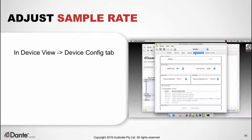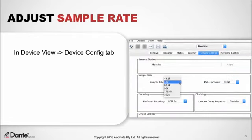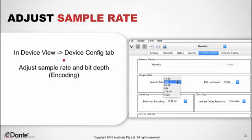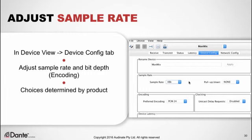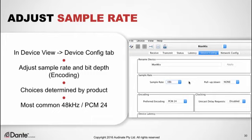In order for Dante devices to successfully subscribe to one another, they must be using the same audio format — in other words, sample rate — and this is adjustable for each device in the device view. Double-click the name of the device you wish to adjust, navigate to the Device Config tab, and adjust the sample rate and bit depth, labeled as encoding. Some manufacturers may only allow certain sample rates and encoding depending on their product, but by far the most common combination is 48 kHz and 24-bit depth, or PCM24.